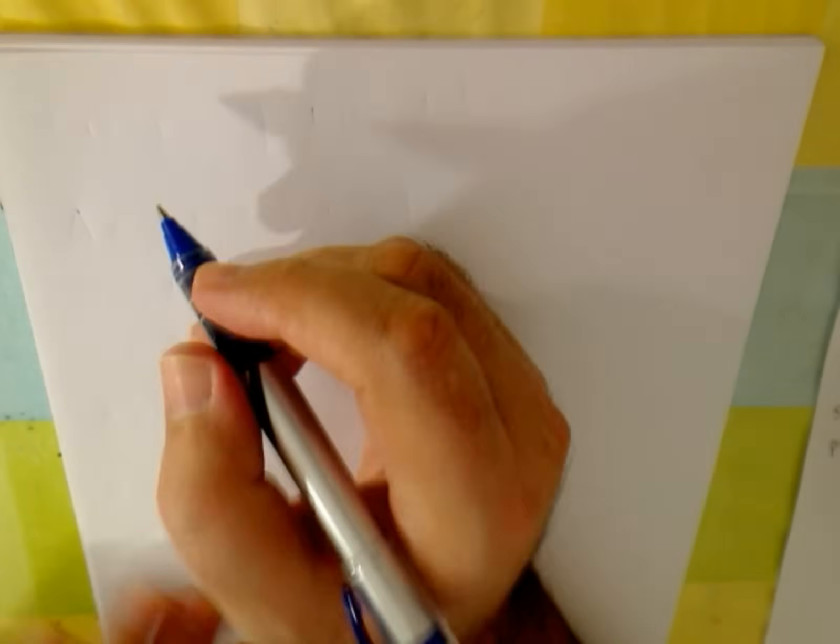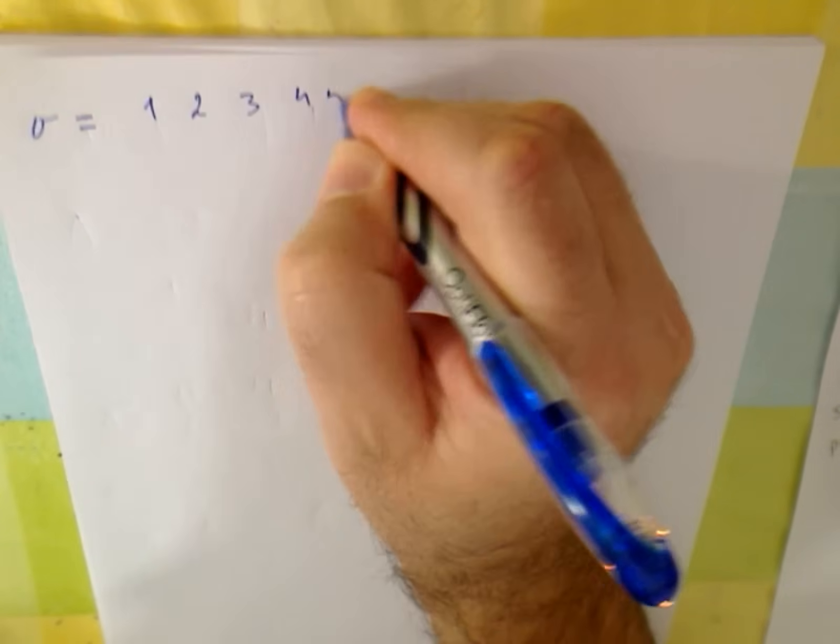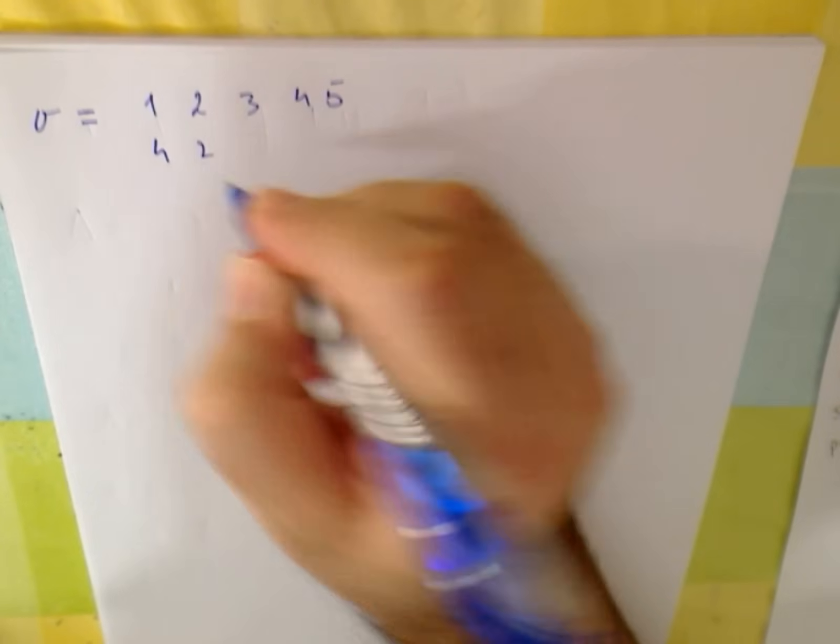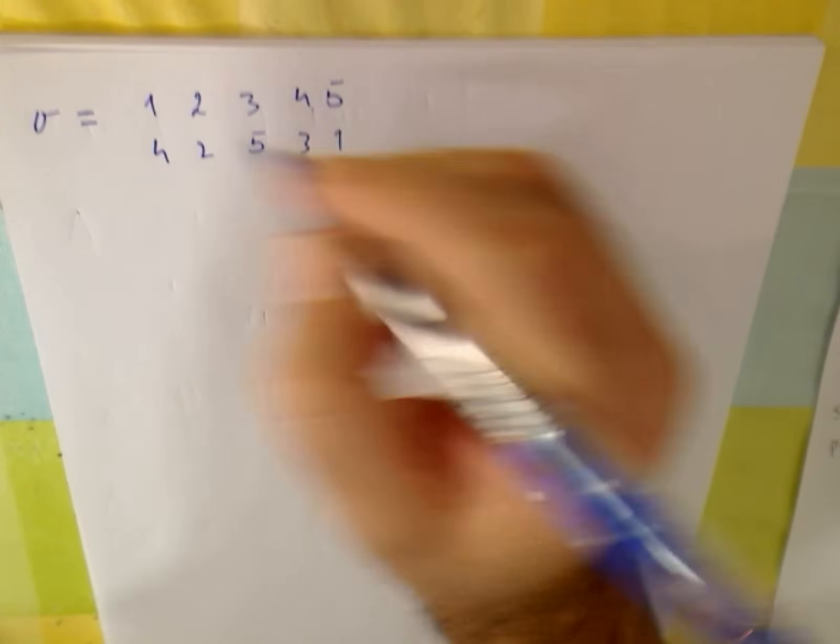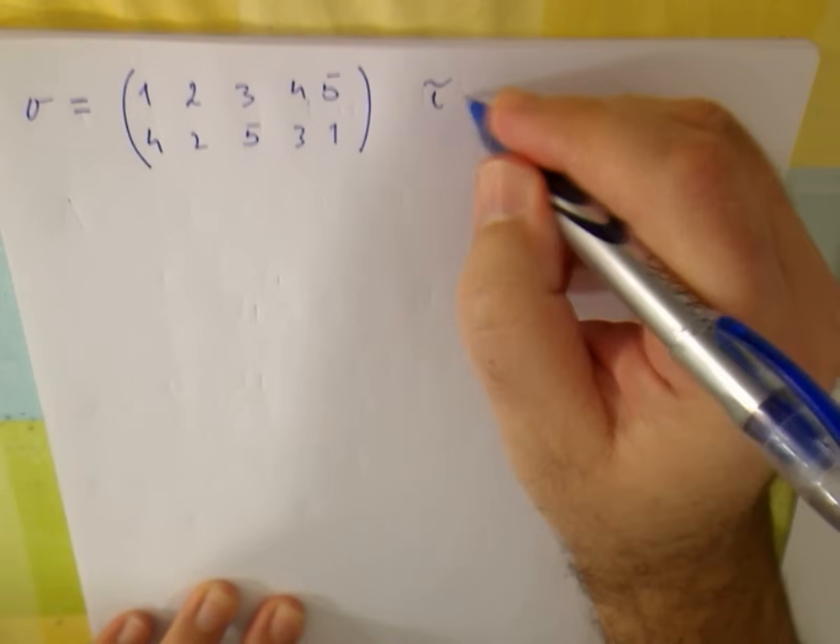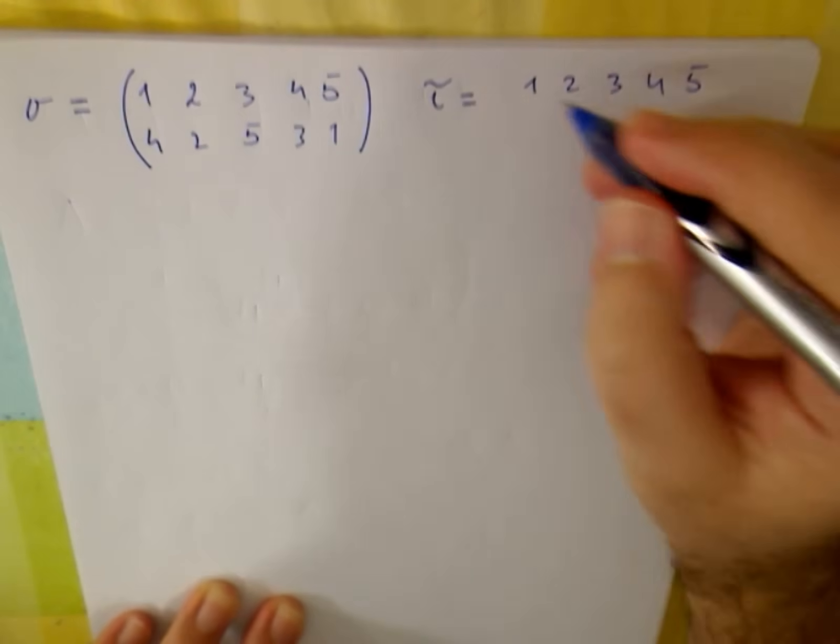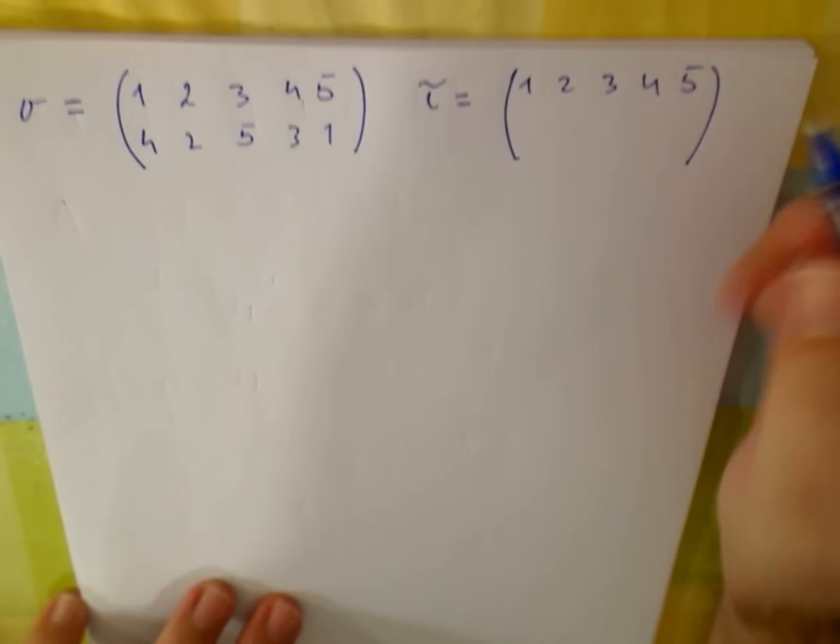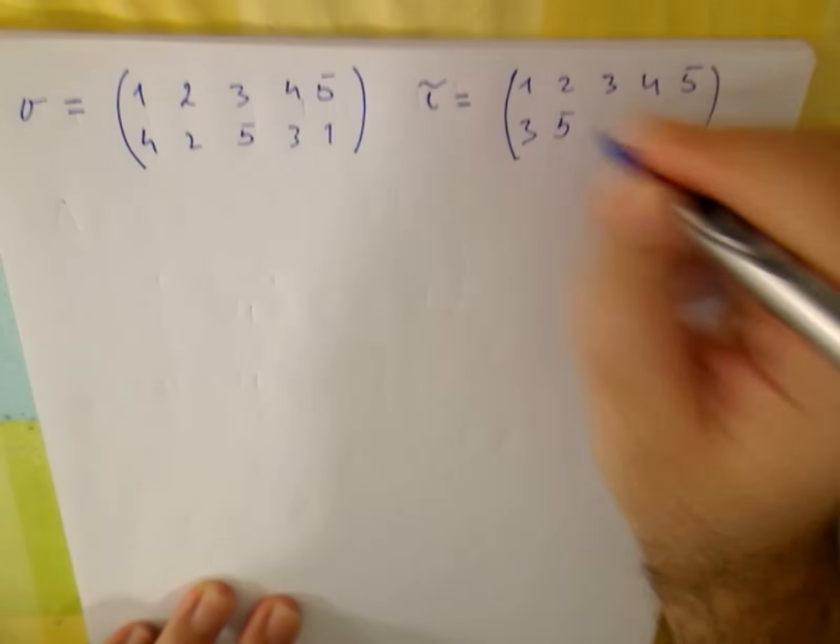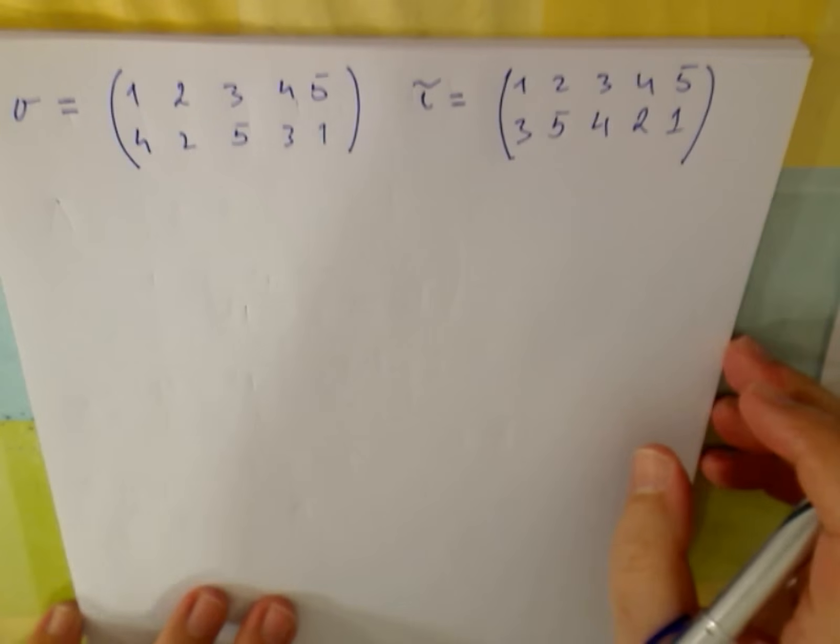Now I am going to rewrite. First, the first permutation we took. So 1, 2, 3, 4, 5. It is 4, 2, 5, 3, 1. This is sigma. And now I am going to do another one. A tau one. Tau will be 1, 2, 3, 4, 5. And let us say 3, 5, 4, 2, 1 for instance.